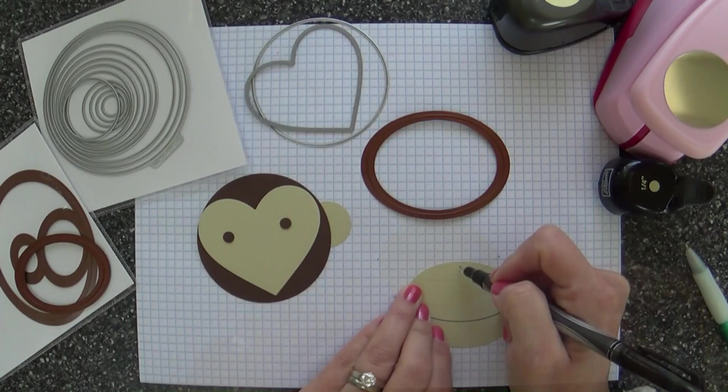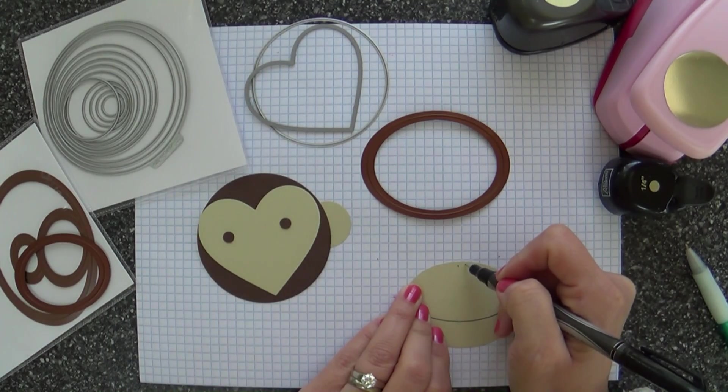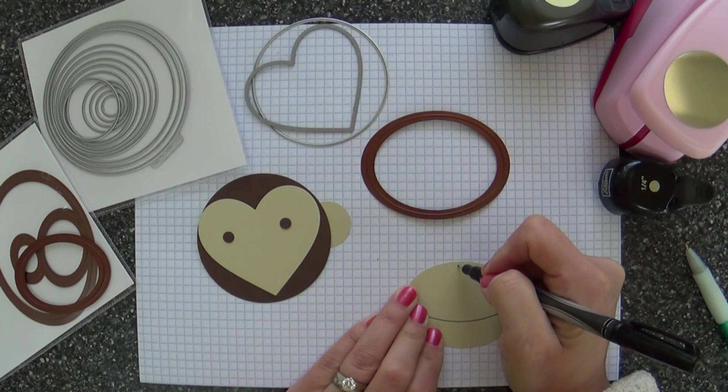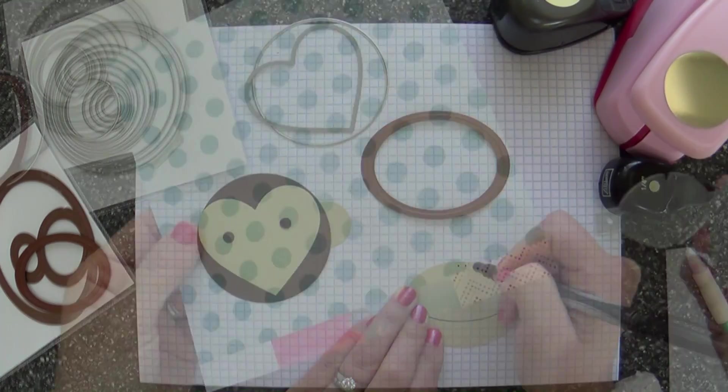I use that oval nestability as a guide. You wouldn't have to use it as a guide. I just like that because it gives it a nice smooth line. And then I just drew some little nostrils with my Sharpie pen.